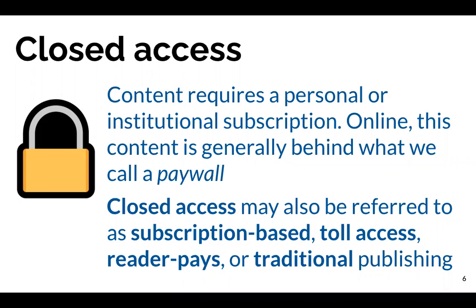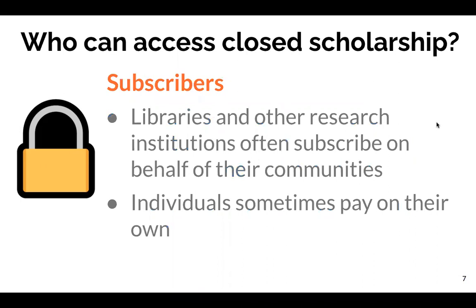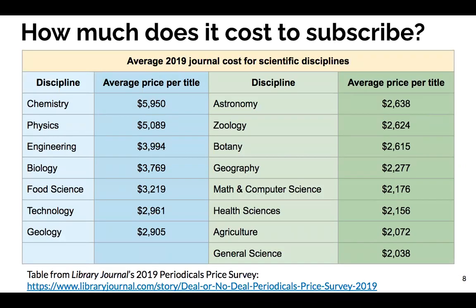Closed access may also be referred to as subscription-based, toll access, reader pays, or traditional academic publishing. Who can access closed scholarship? It's really just limited to subscribers — often libraries and other research institutions that subscribe on behalf of their communities, though sometimes individuals pay on their own. How much does it cost? It can be extremely expensive. This chart shows, from 2019, some journal costs for scientific disciplines — these are averages. Chemistry is right at the top at almost $6,000 average price per title. And there are going to be many titles in many different disciplines, so it can be extremely expensive, and that prices out some readers and some libraries too.